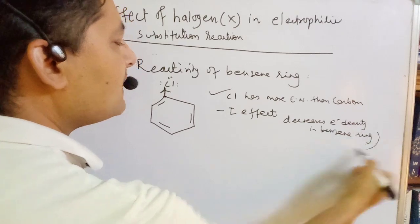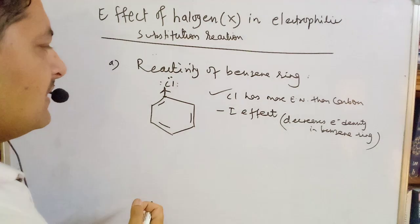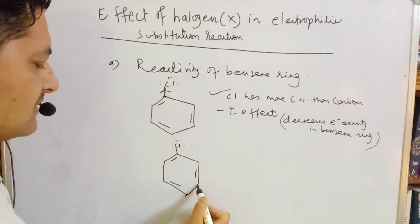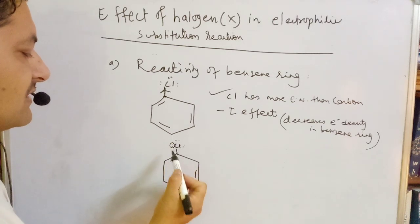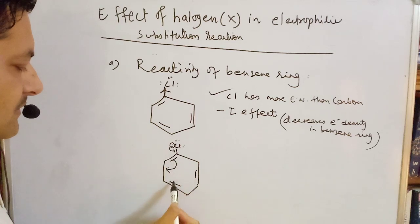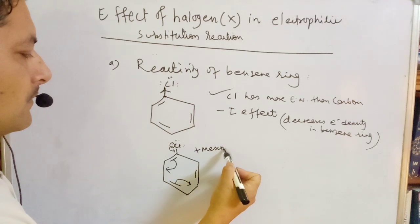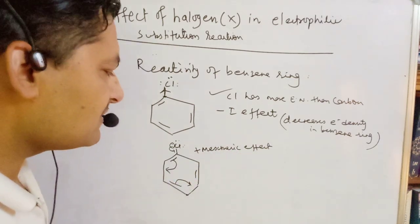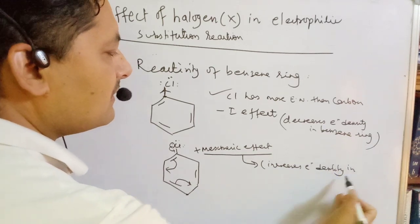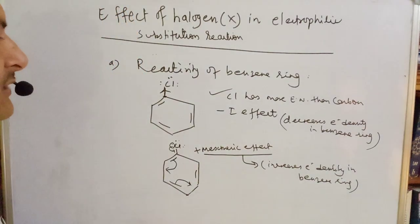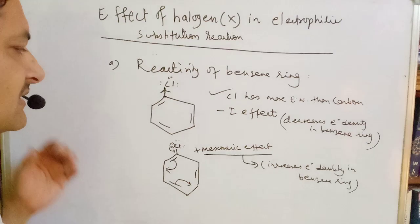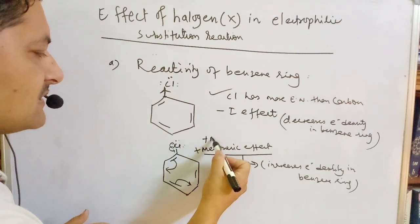This is the minus I effect in the benzene ring. On the other hand, chlorine also donates two electrons into the ring through the pi system — this is the plus mesomeric effect (+M effect), which increases electron density in the benzene ring. So we have two opposite effects here.